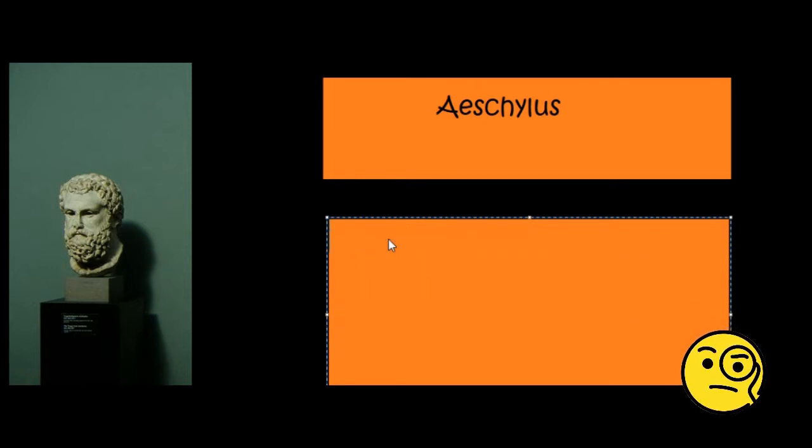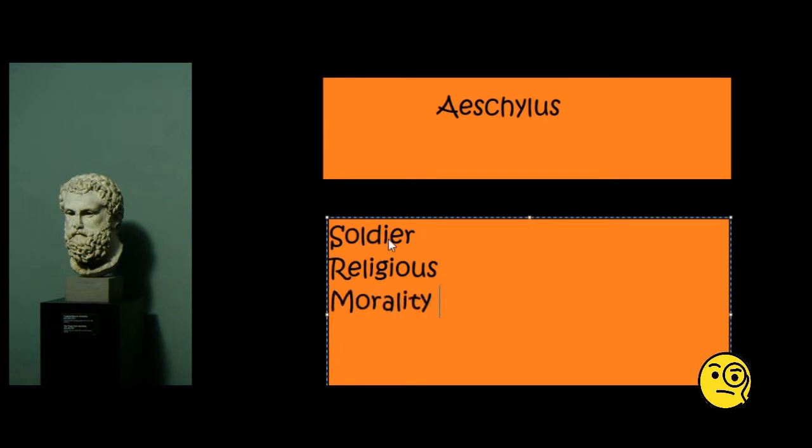Aeschylus was a serious man and a soldier. He had fought in the battle of Marathon, in the war between the Greeks and the Persians. Aeschylus was a serious man and he was quite religious. His plays deal with morality and justice, and man's relationship with the gods.